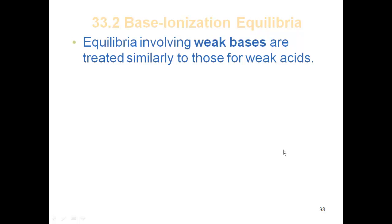Up to this point, everything we did so far has been with weak acids. We also have to worry about weak bases. We treat them exactly the same way we do the acids. The major difference is that we're going to be producing hydroxide ions and be using something called a Kb instead of Ka.